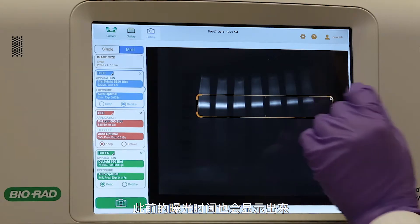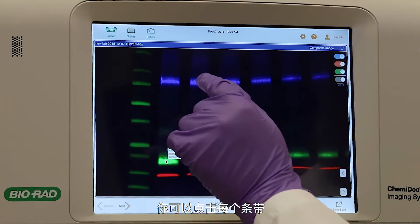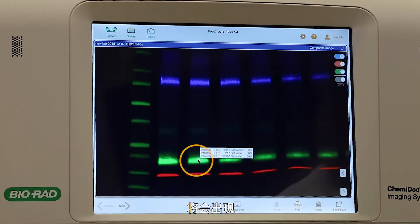Previous exposure times are also indicated. For a quick assessment of the band intensities, you can tap each band. The relative fluorescence units and percent of saturation will appear.